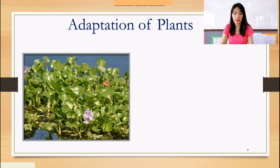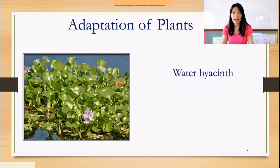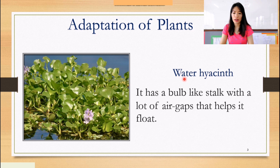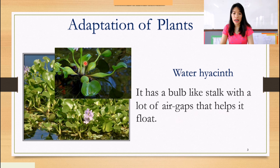What is the name of this plant? This plant is called water hyacinth. How does the water hyacinth adapt to its environment? Water hyacinth has a bulb-like stalk with a lot of air gaps that helps it to float. That is how the stalk looks — it's like a bulb.